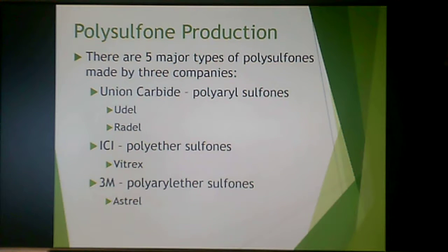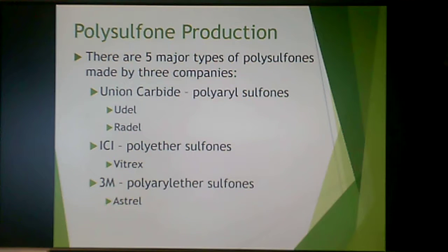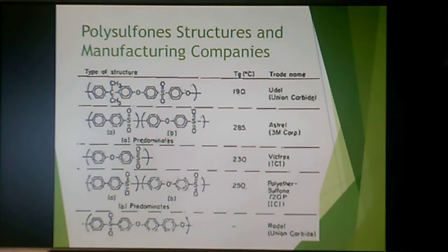There are five major types of polysulfones. There are the Union Carbide ones that are polyaryl sulfones — Udel and Radel — and then there's the polyether sulfone Vitrex and the polyaryl ether sulfone Astral. So this is a family, whereas polyphenylene sulfide is just one structure. There are many different kinds of polysulfones. Please excuse the quality of this graphic, but it's really the only one I could find that showed all of these together.